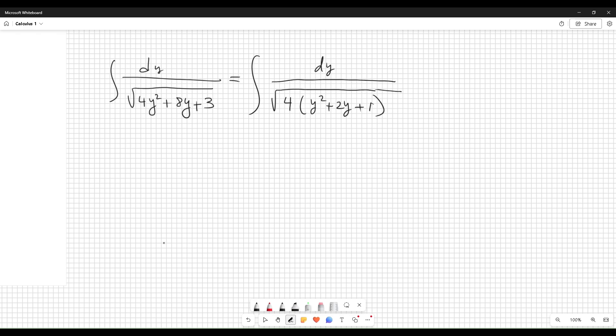Actually, the value you put here to complete the square is 4, but we have 3 plus the minus 1, so 4 minus 1 is 3. Okay, now you have dy over square root of 4 times (y plus 1) squared minus 1.